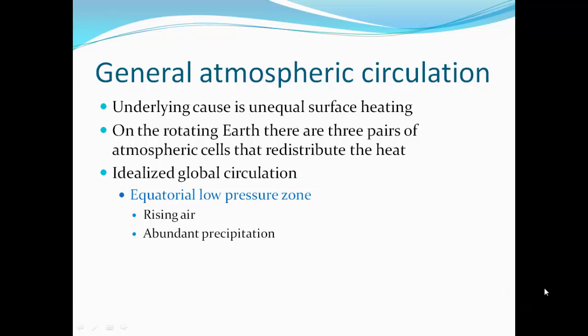General atmospheric circulation: the underlying cause is unequal surface heating. On the rotating Earth, there are three pairs of atmospheric cells that redistribute the heat. Much of Earth's surface is water, which cools and heats more slowly than land. Continents heat more and faster and cool more and faster, causing unequal surface heating and therefore atmospheric circulation.